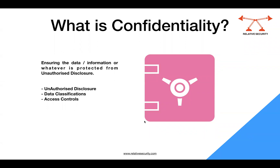One of the questions that an interviewer may ask you is: what is confidentiality? The straight answer is ensuring the data, information, or whatever you are protecting should be only available to the authorized people. Authorized personnel or authorized systems are those who should have access to the system.